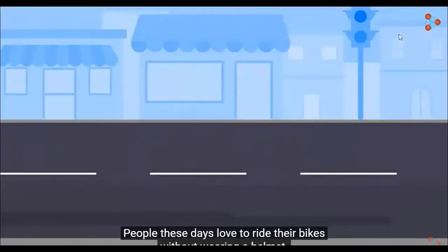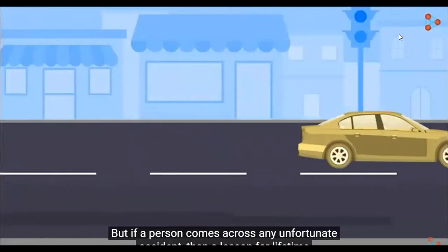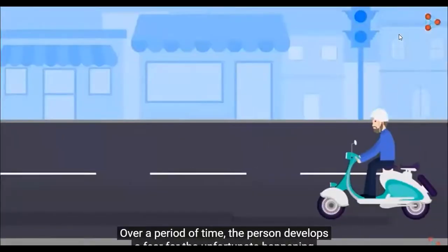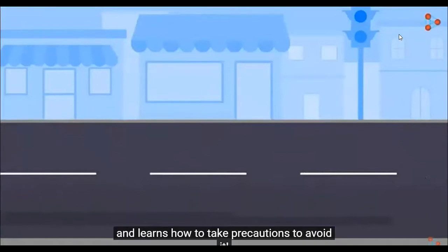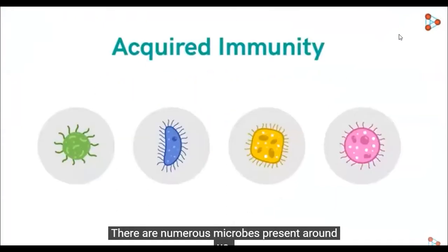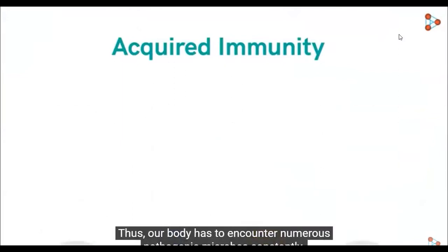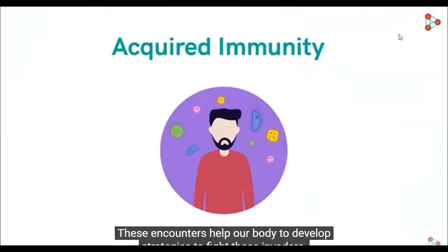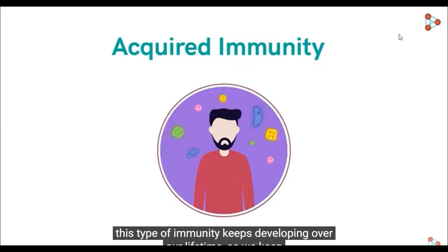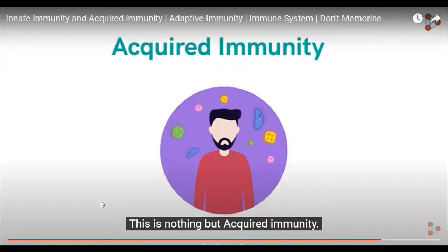Let's understand that with an example. People these days learn to ride without wearing a helmet, but that is definitely not a safe option. If a person comes across any unfortunate accident, then the lesson for a lifetime is learned from it. Over a period of time, the person develops a fear of the unfortunate happening and learns how to take precautions to avoid it. The same is the case with our acquired immunity. There are numerous microbes present around us that constantly find an opportunity to enter our body. Thus, our body has to encounter numerous pathogens and microbes constantly. These encounters help our body to develop strategies to fight these diseases, and this is how immunity is developed against specific pathogens. And this type of immunity keeps developing over a lifetime as we keep encountering several invaders.